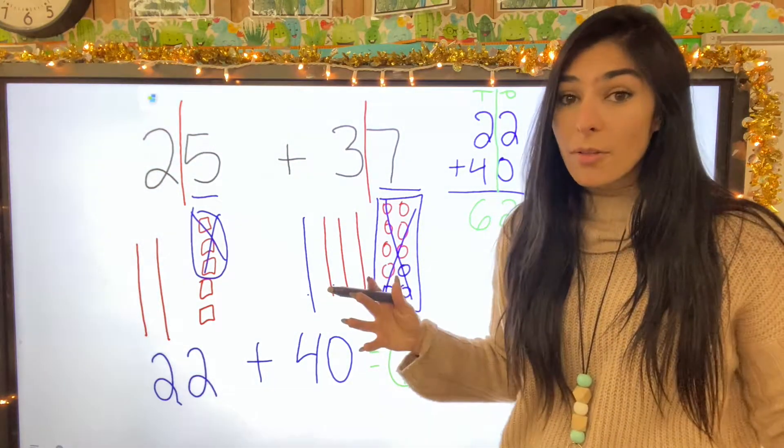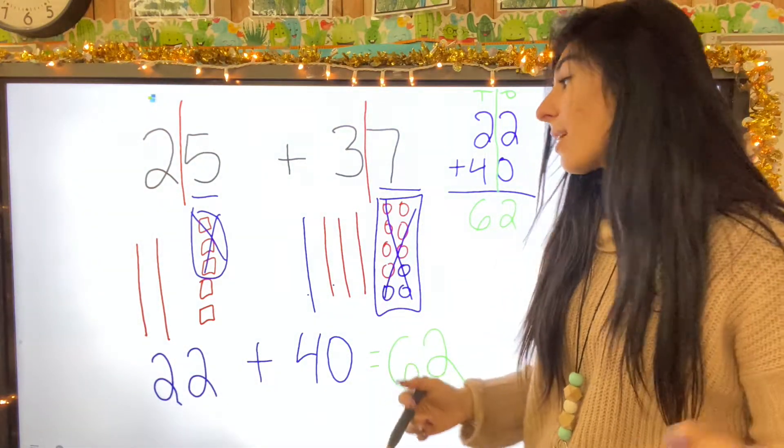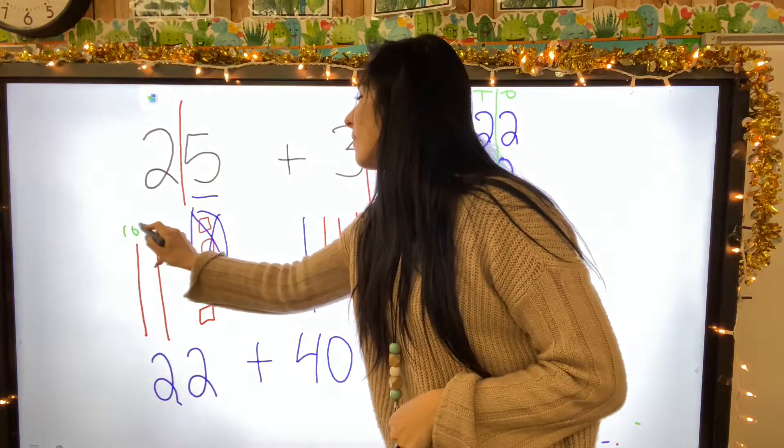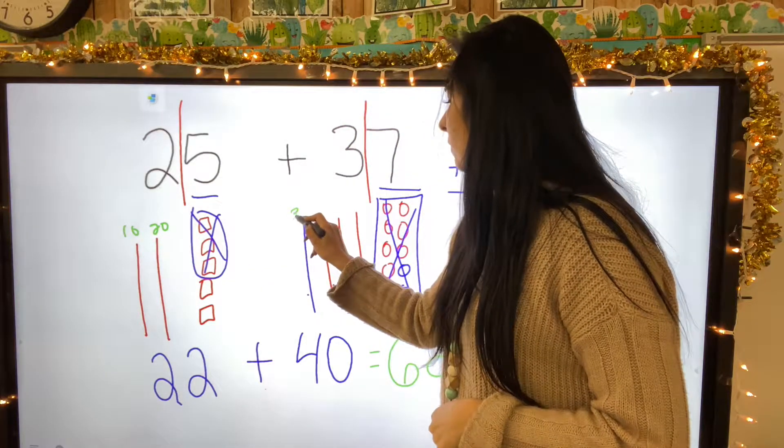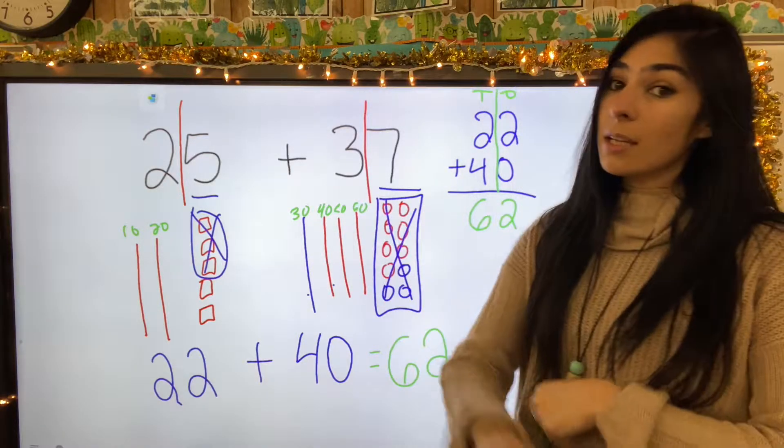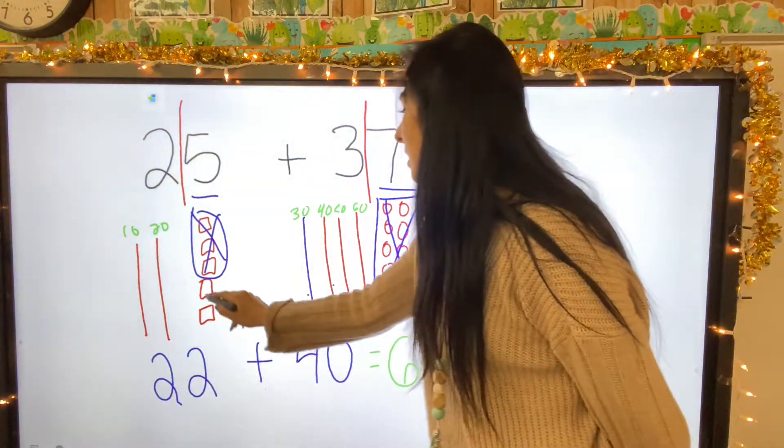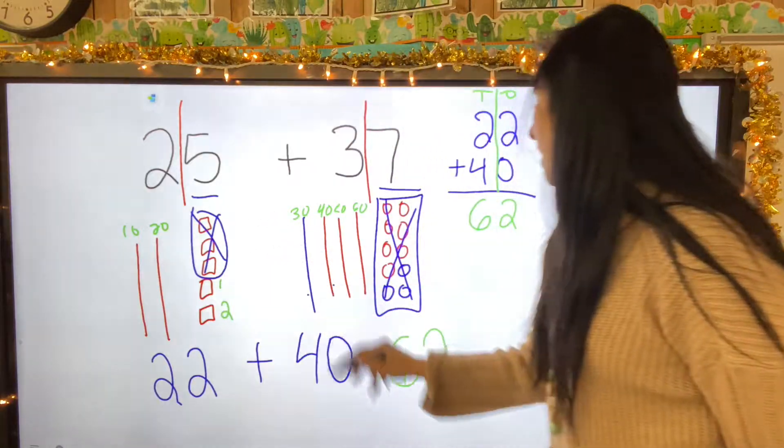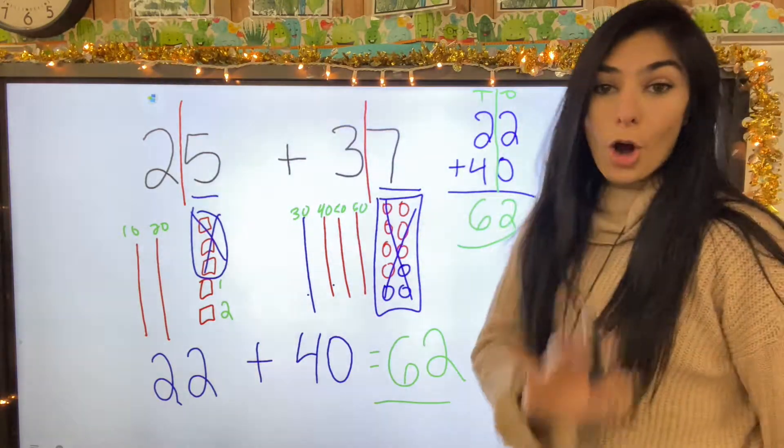Also if I want to just count up all the tens and then count up all the ones, I can do that. So I have ten, twenty, thirty, forty, fifty, sixty. Go back and count your ones: sixty-one, sixty-two, and that is what we have all three times.